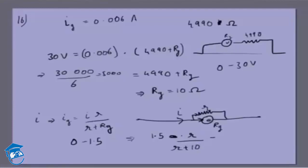Which is 1.5 into small r by small r plus 10 is equal to 0.006 ampere. So 1.5 goes here, which means that 0.006 ampere is the maximum possible value.